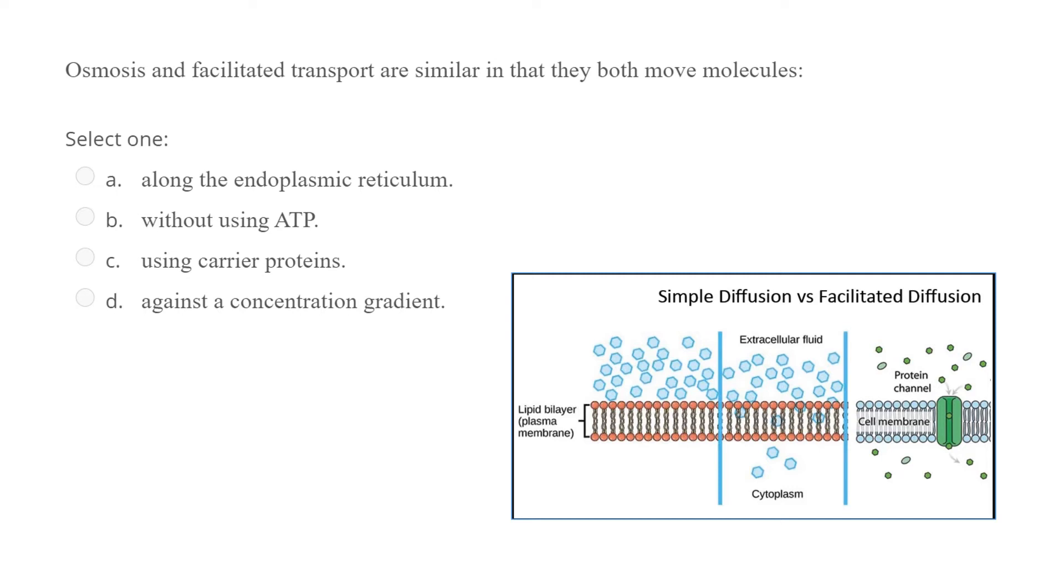Osmosis and facilitated transport are similar in that they both move molecules: A along the endoplasmic reticulum, B without using ATP, which means passive movement, C using carrier proteins,